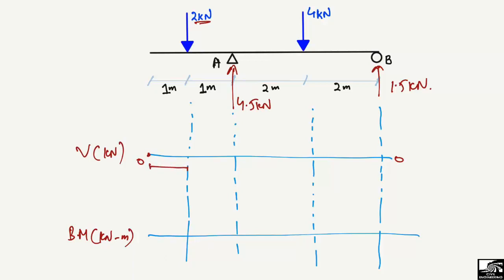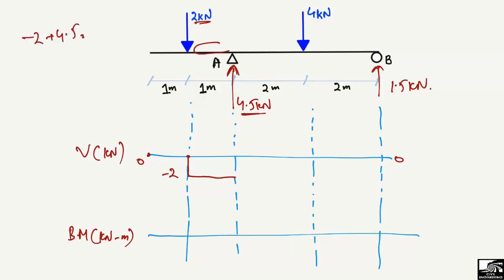At the free end we start at zero. The 2 kN load acts at 1 meter from the free end, so at that point the shear force drops to minus 2 kN because it acts downward. There is no load between that point and A, so we draw a straight horizontal line. At A, the 4.5 kN reaction acts upward, so minus 2 plus 4.5 gives us plus 2.5 kN.